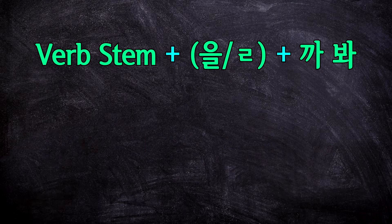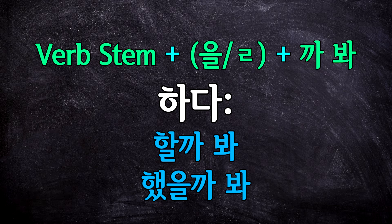This verb stem can be either in the present tense or in the past tense. So if we take the verb 하다, it can either become 할까 봐 or 했을까 봐, depending on what you want to say.